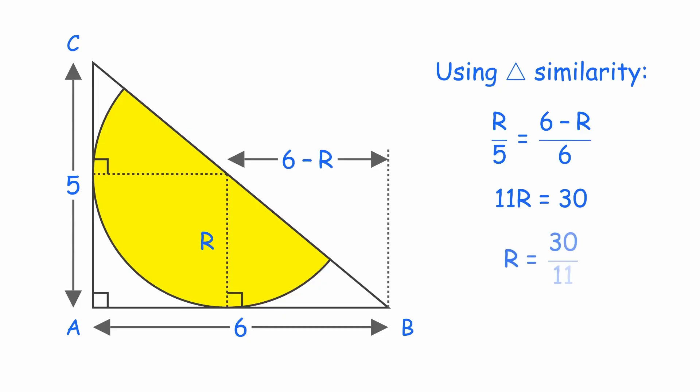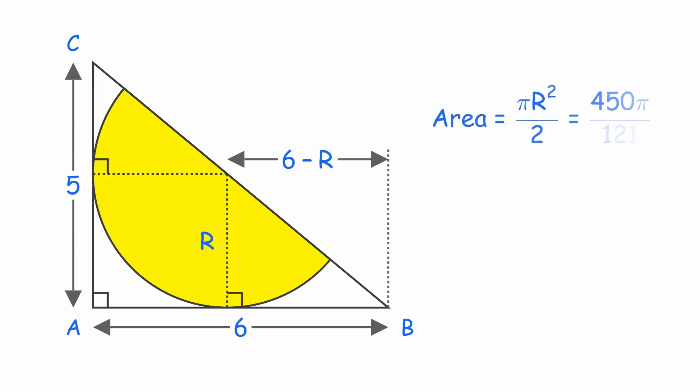Solving this proportion gives R equals 30 over 11. Finally, the area of the semicircle is pi R squared over 2. Substituting R, we get 450 pi over 121. That's our result, and we can leave the answer as is.